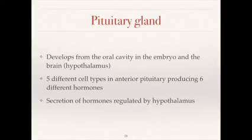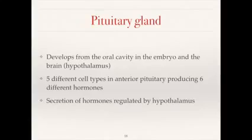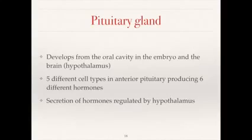Unilateral optic nerve hypoplasia carries a 69% risk of hypothalamic and pituitary dysfunction and a 39% risk of associated developmental delay. In bilateral optic nerve hypoplasia, 81% of children have hypothalamic or pituitary dysfunction and 78% have developmental delay.